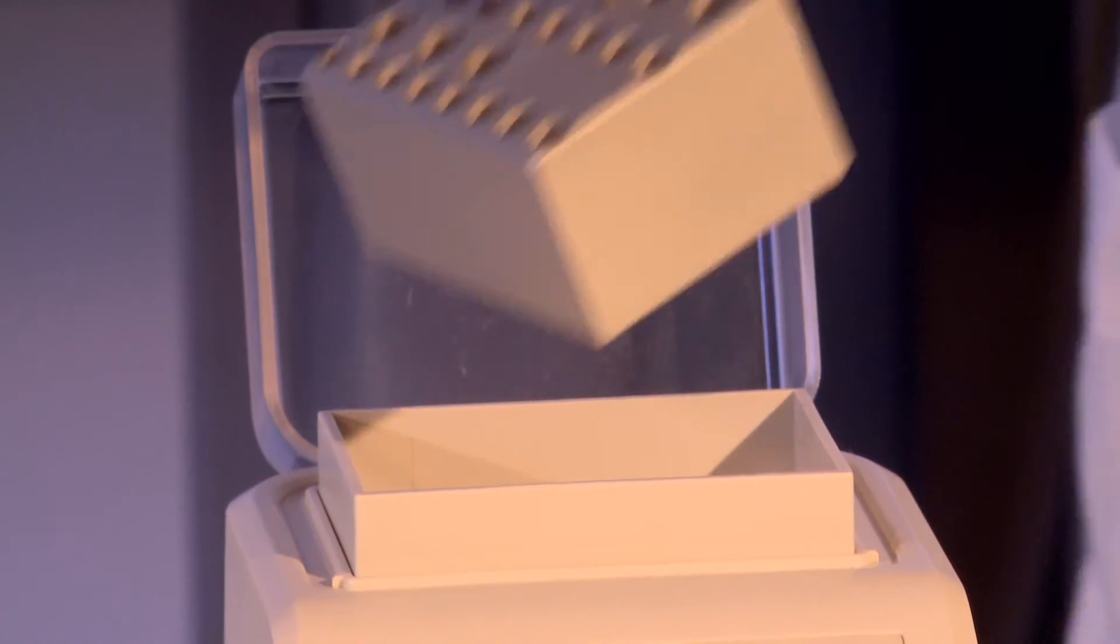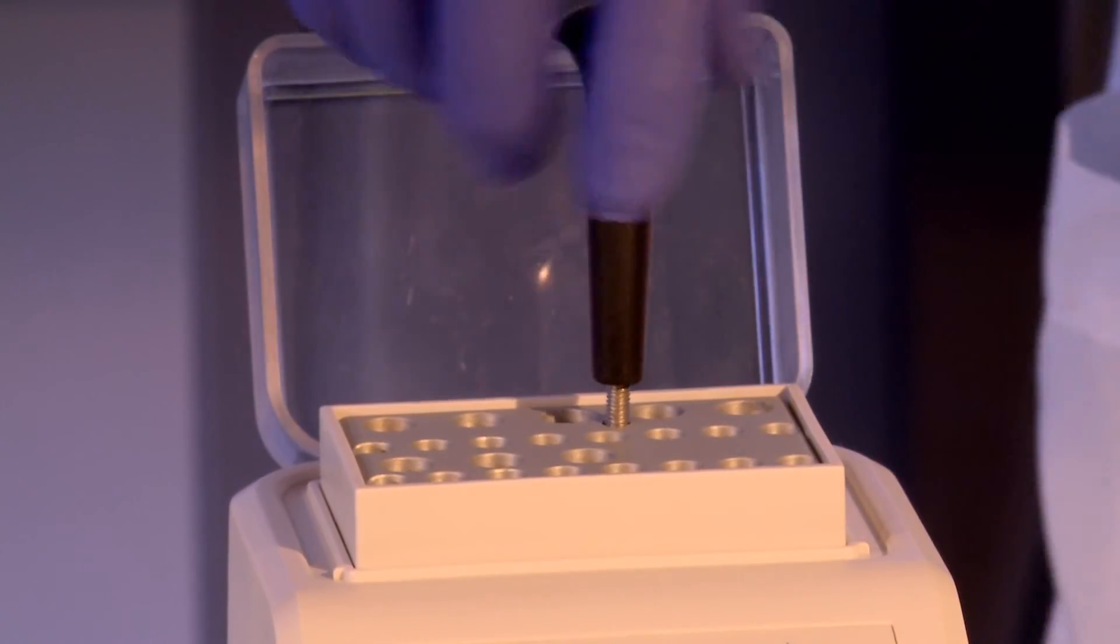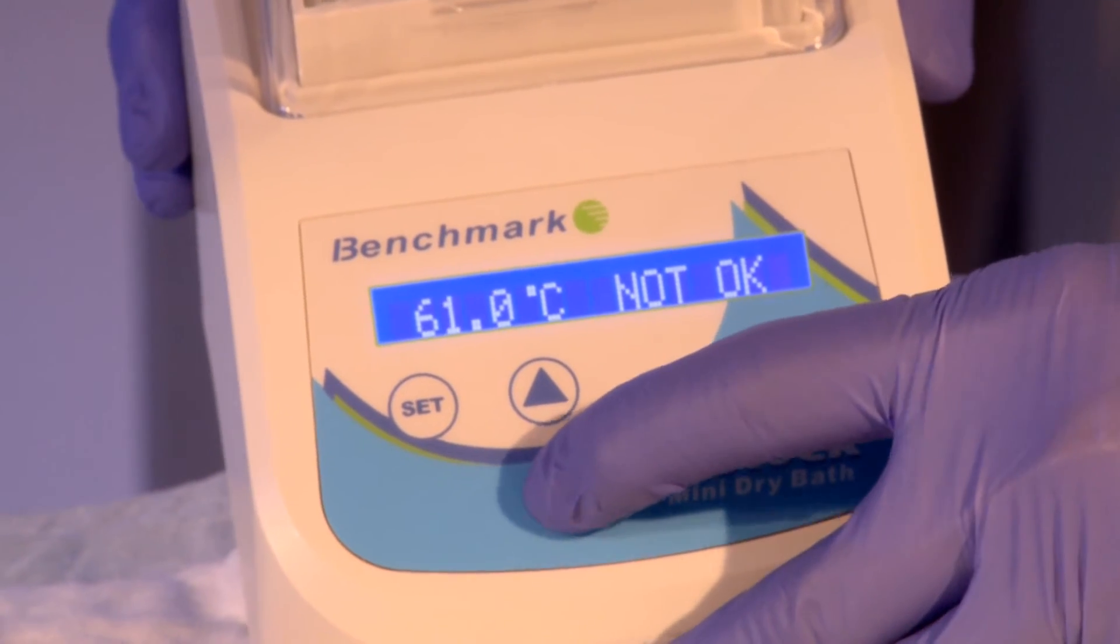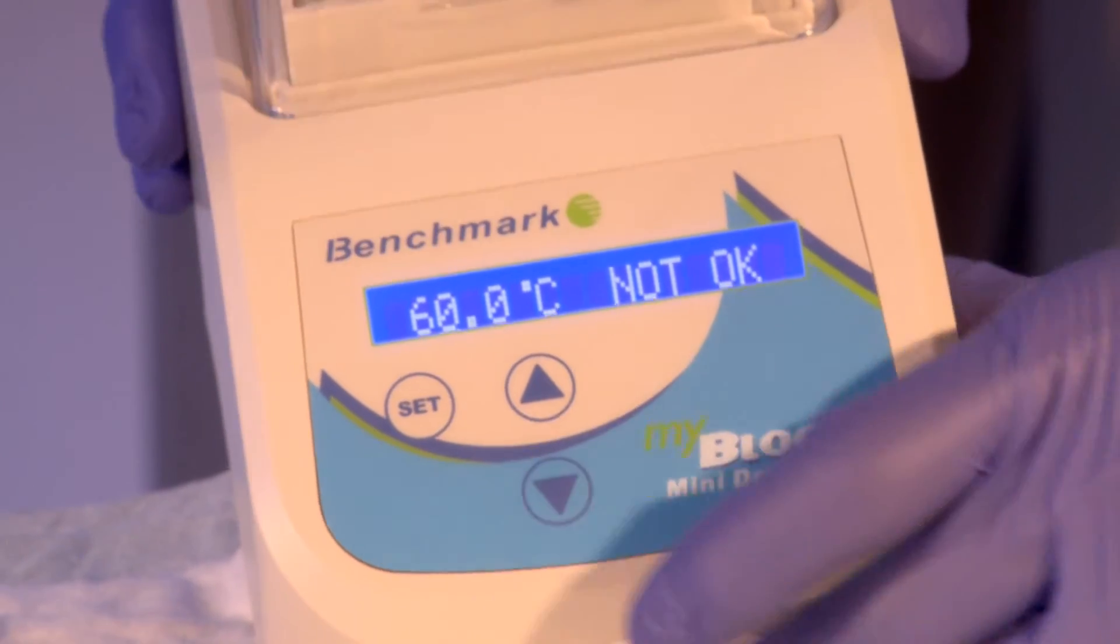Then return it to the internal heat plate and allow the block to reach the target temperature. In this case, we will be performing the PC-run reactions at 60 degrees centigrade.